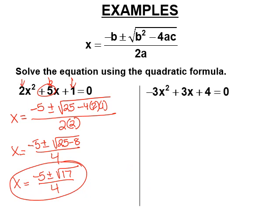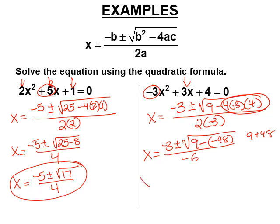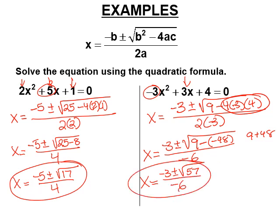So try this one. x equals negative b, so negative 3 plus or minus the square root of b squared — 3 squared, which is 9 — minus 4 times a. A is negative 3, times c, which is 4. All over 2 times negative 3. Almost all the mistakes with the quadratic formula occur right there. I'm going to write minus 4 times negative 3, which is negative 12, times 4, which is negative 48. So it's 9 minus negative 48, which is the same as 9 plus 48, all over negative 6. So x equals negative 3 plus or minus the square root of 57, all over negative 6.